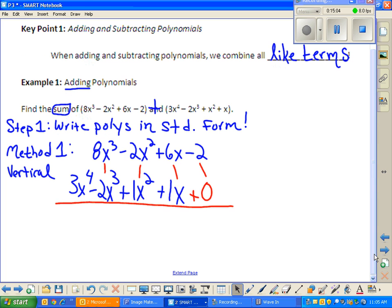Now all I have to do is combine those like terms, kind of like we said in the beginning. So we have 3x to the 4th, and then I do 8x cubed plus a negative 2x cubed, or 8x cubed minus 2x cubed, however you want to look at it. That's going to be plus 6x cubed. Negative 2x squared plus 1x squared is minus 1x squared. 6x plus 1x is 7x, and negative 2 plus 0 is negative 2. I'm going to check my answer to make sure it's in standard form. Exponents go 4, 3, 2, 1, and then we have a constant at the end, so this is a good answer.